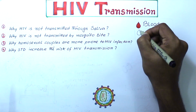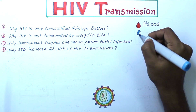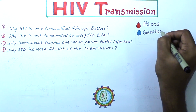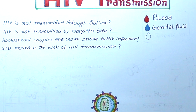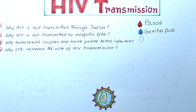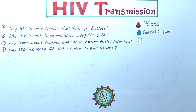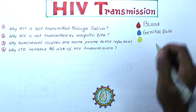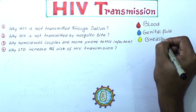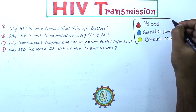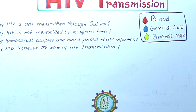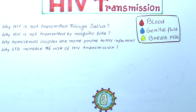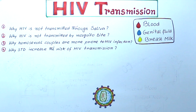Most often HIV is transmitted by contact with three types of body fluid: first is blood, second is sexual or genital fluid such as semen and vaginal fluid, and third is breast milk. But before transmission, these fluids must come in contact with broken skin, mucous membrane, or directly into the bloodstream.